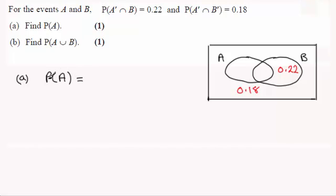Now if we're working out the probability of A, all of this set here, then I know that all of this region plus the 0.22 plus the 0.18 must come to 1. So therefore...